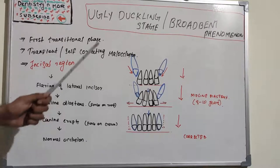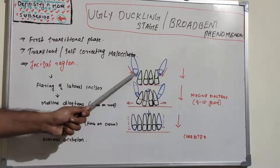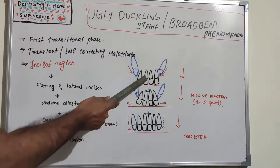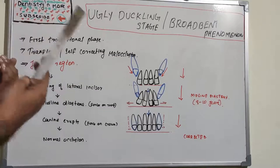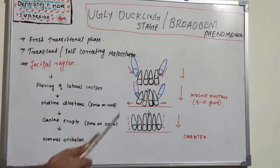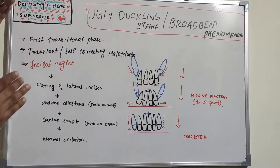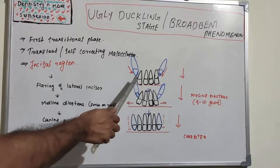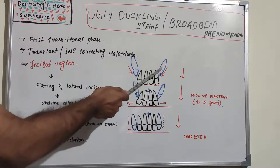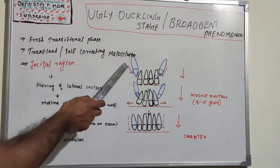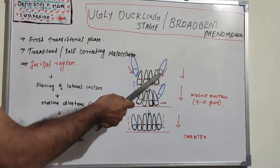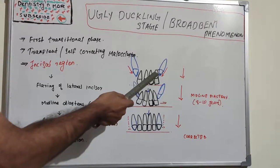Now let's see what is happening inside our teeth when the canine erupts. It all starts with the permanent canines — this is a transitional phase. Normally the central incisor and lateral incisor erupt during six to eight years. The permanent canines, which are very big — the longest tooth with a big crown, lengthy root, and bulky structure — when they erupt, they apply pressure on the roots of the lateral incisors from both sides. This blue represents the canine applying pressure on the lateral roots.